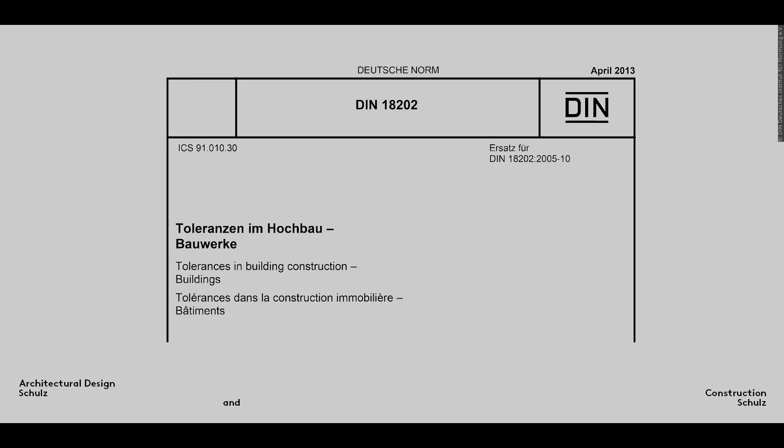In reality, no building is ever built exactly to size. In Germany, the way this problem should be handled is set out in German Standard DIN 18202.